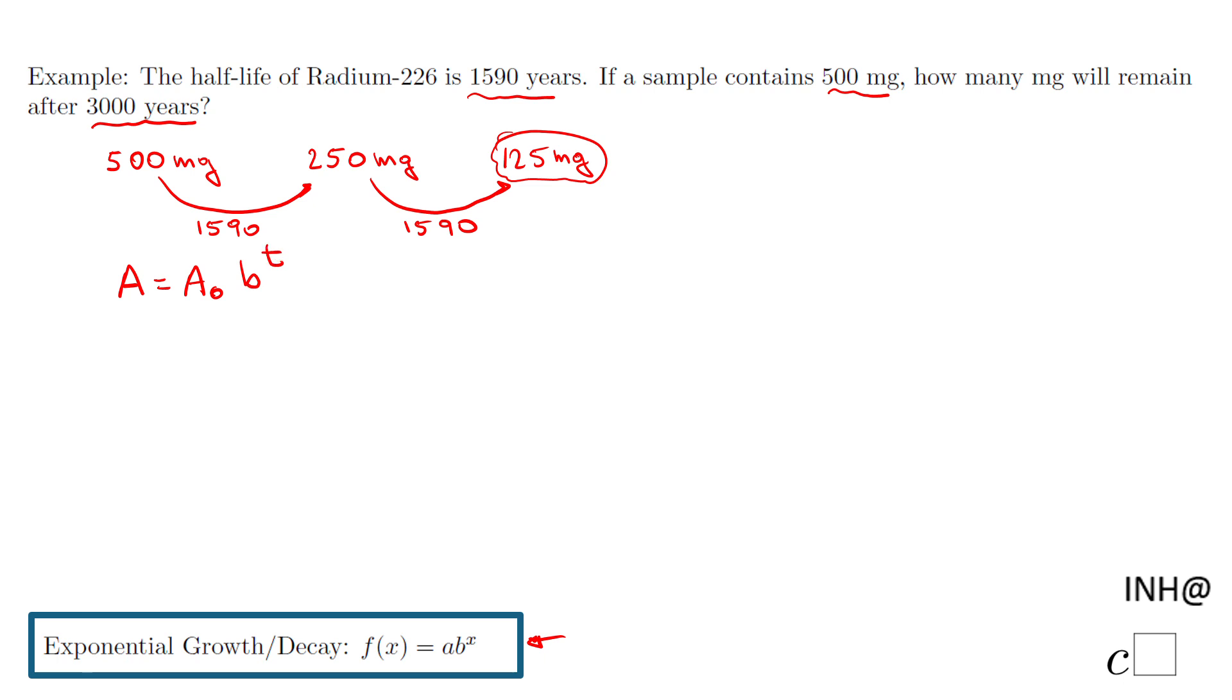We know A zero here, A zero is 500 milligrams, this is the initial value. So we have A equals 500 times b to the t, but now we really need to find that b.